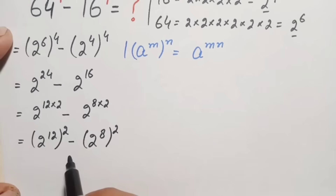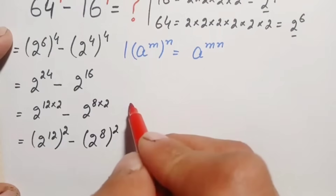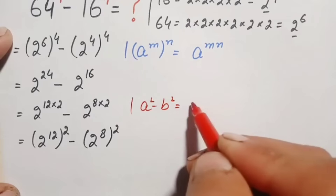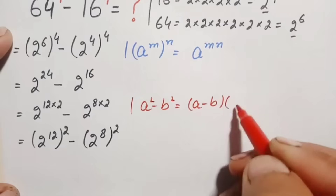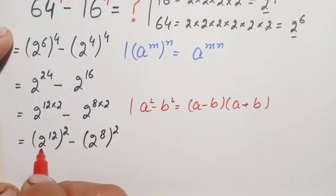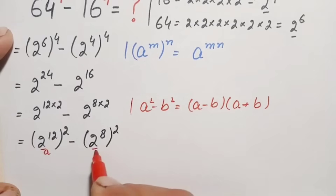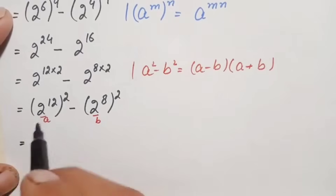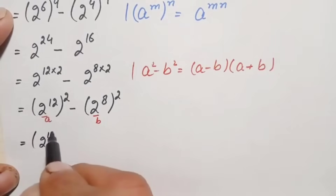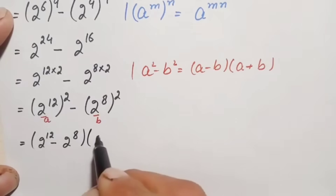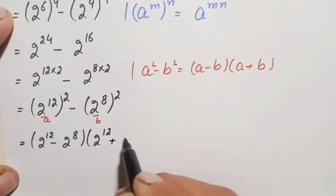We apply the algebraic identity a² − b² = (a − b)(a + b). Here a = 2^12 and b = 2^8, so the expression becomes (2^12 − 2^8)(2^12 + 2^8).